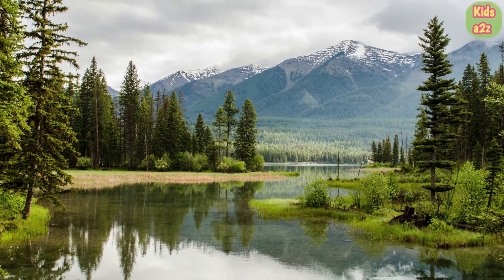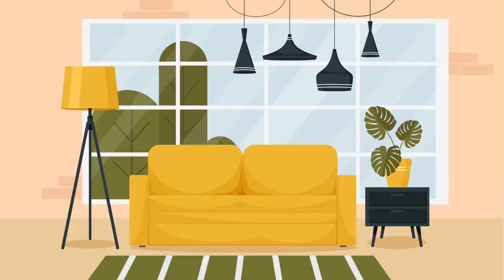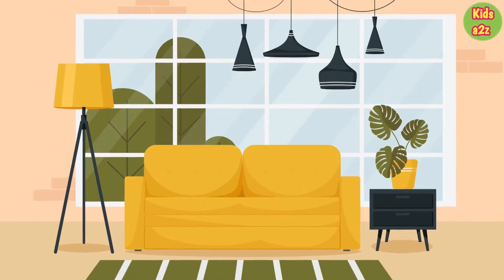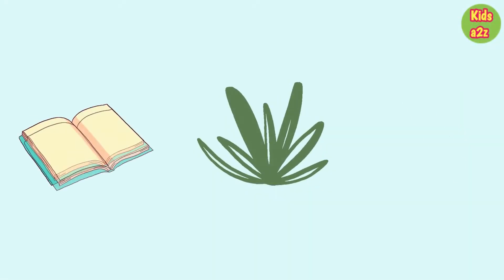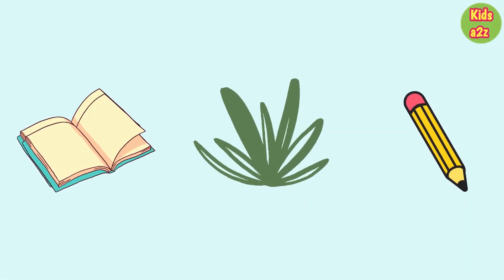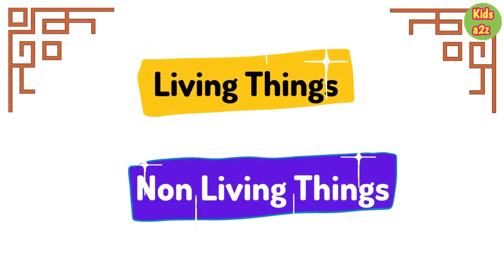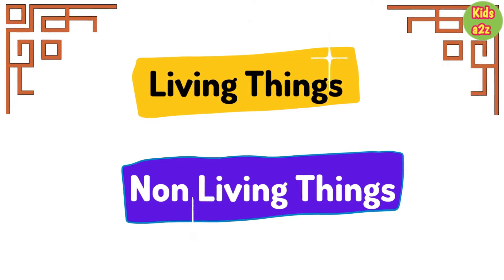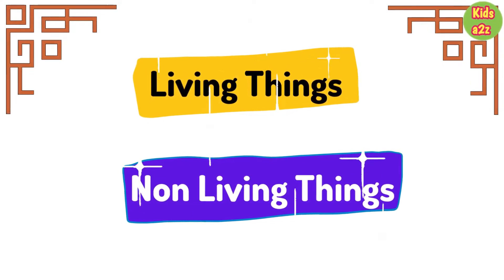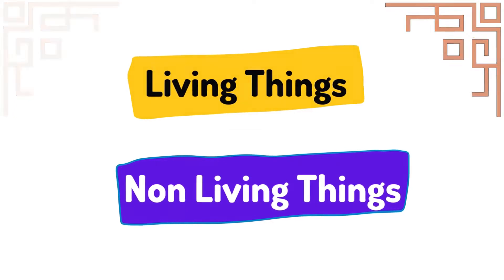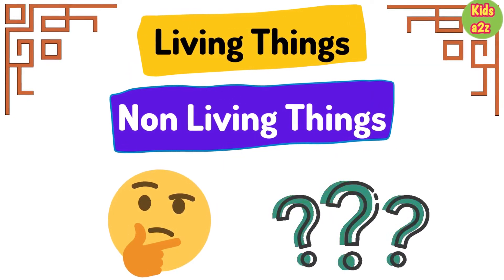There are lots of different things in the world around us. Just look around your room now and you will find lots of examples — a book, a plant, a pencil. We can separate all these things into two different categories: living things and non-living things. But what are living things and non-living things?